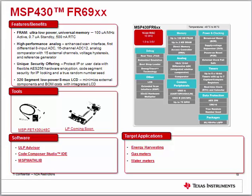TI has newly released the FR6989 device with 128kB of FRAM memory, enhancing the scan interface module along with A320-segment LCD driving capability. The device also comes with built-in AES-256 to protect IP and user data. It features an 8-input, 16-channel, 12-bit ADC with significantly lower power, helping reduce active current consumption — a very important feature for battery-powered water meters claiming around 20 years of lifetime.